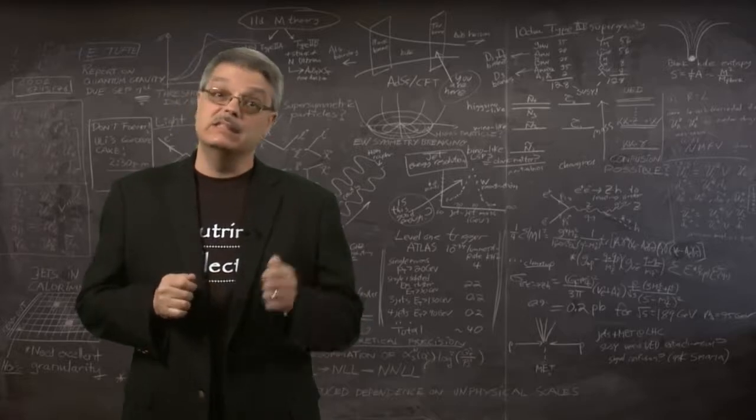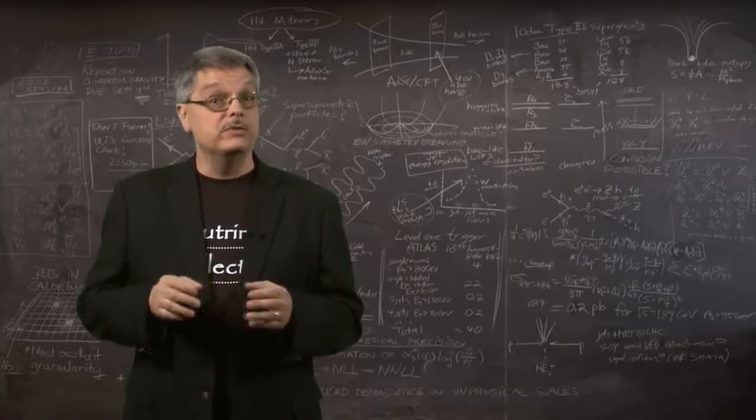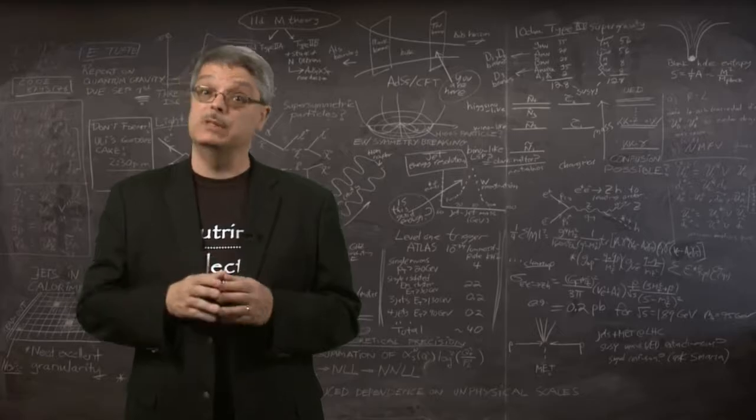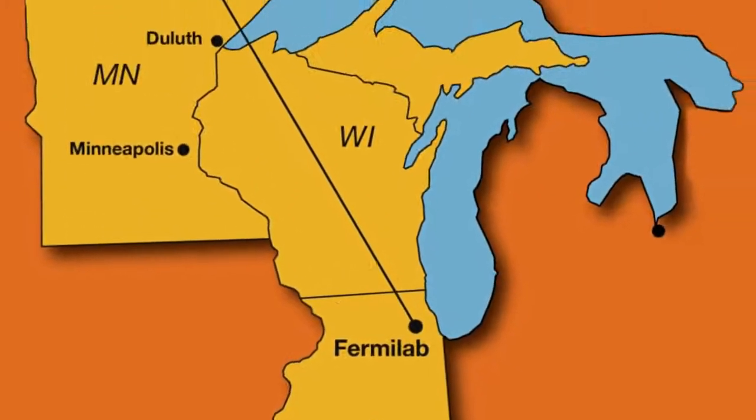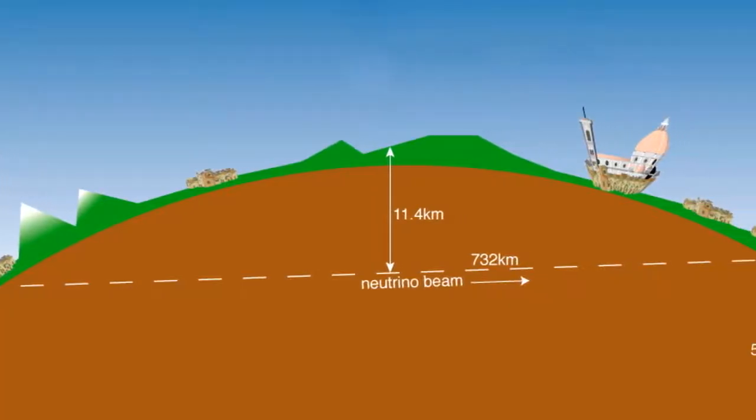In the past decade, scientists have studied neutrino oscillation using beams of neutrinos made at particle physics laboratories. The Fermilab accelerator near Chicago, the CERN accelerator near Geneva, Switzerland,